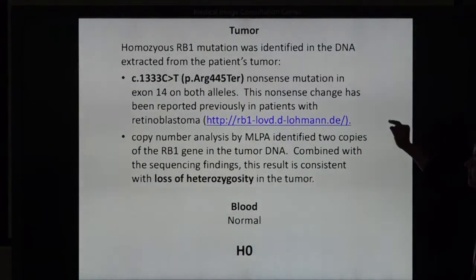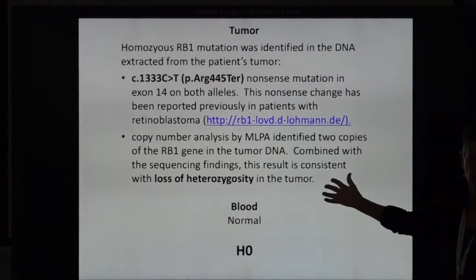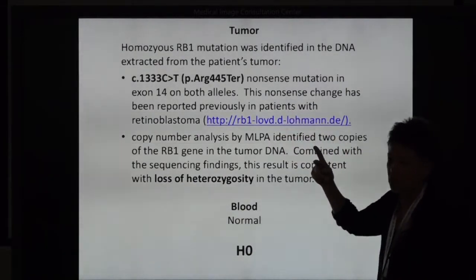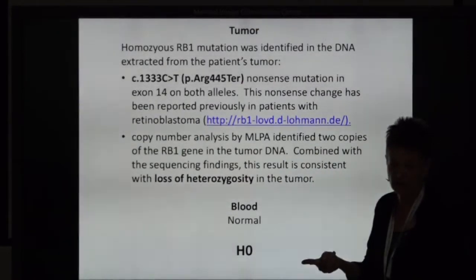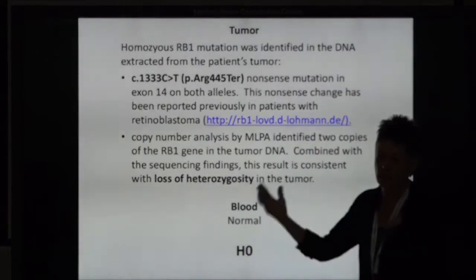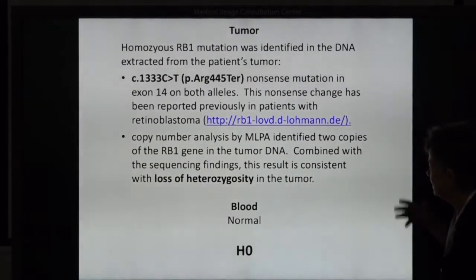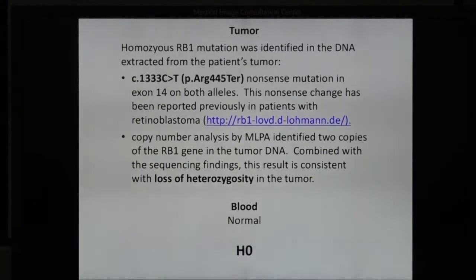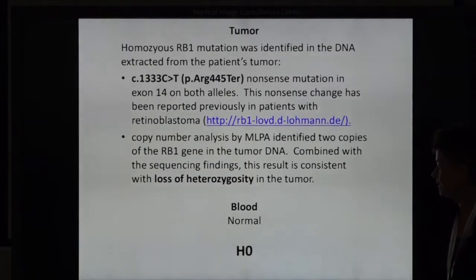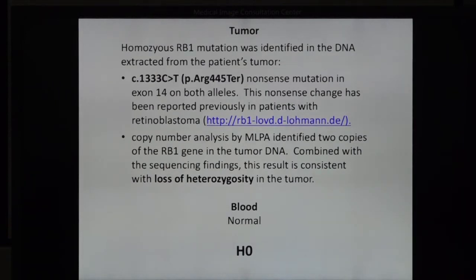That tumor is also interesting — this is the report from Impact Genetics. In the tumor there's a homozygous mutation: two identical copies, both RB1 genes have exactly the same mutation, and yet there are two copies of the RB gene — there's been loss and reduplication, it's not hemizygous. The blood is normal, so this child is also H0. One child needs chemotherapy — four cycles — and then will be followed. One child needs no more treatment, ready to resume a normal life.